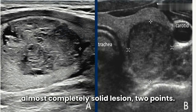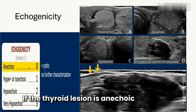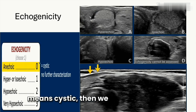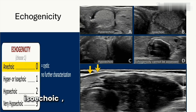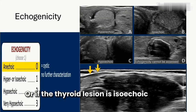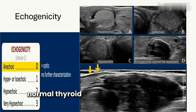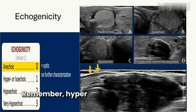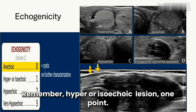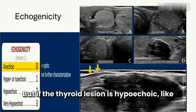The next component is echogenicity. If the thyroid lesion is anechoic — meaning cystic — we give zero points. If the lesion is hyperechoic or isoechoic, meaning its echogenicity equals that of the normal thyroid gland, we give one point. Remember: hyper or isoechoic lesion = one point.